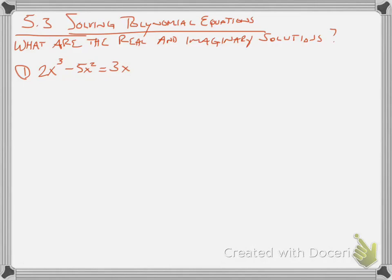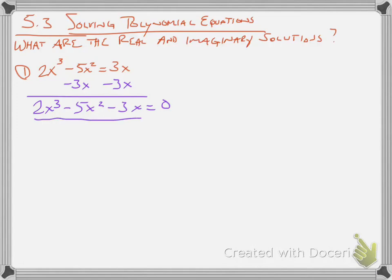I'm going to first subtract 3x here, and make sure you put it in the right spot. This 2x to the third is first, minus 5x squared, minus 3x. They're not going to combine because there's no like terms. And now I'm going to go to factor this. I can factor out an x, and I have 2x squared minus 5x minus 3, and I check to factor that polynomial.